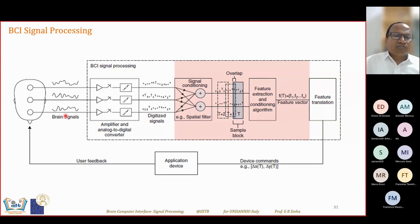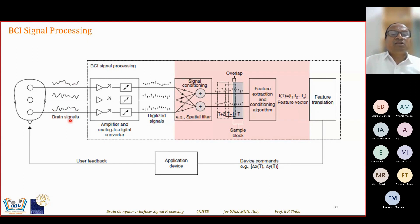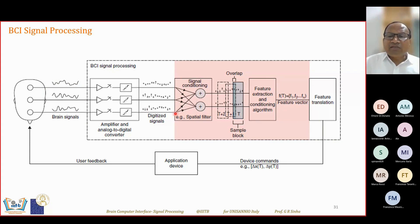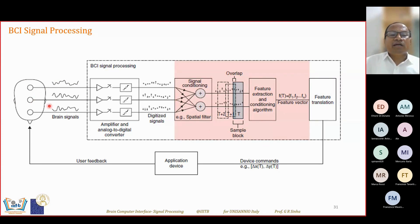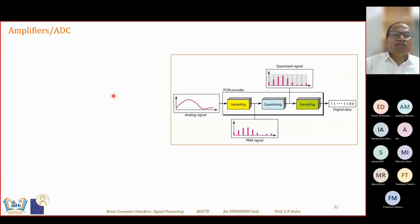The type of signal — EEG, MEG, or any other modality — determines which appropriate filters and feature extraction methods are used in the pipeline.